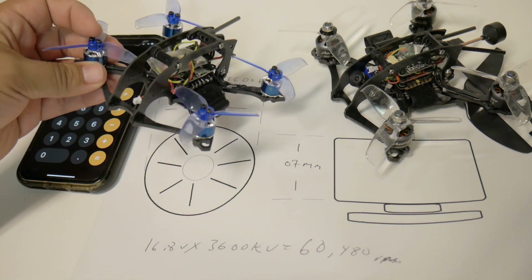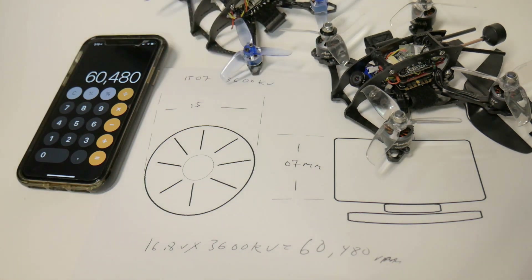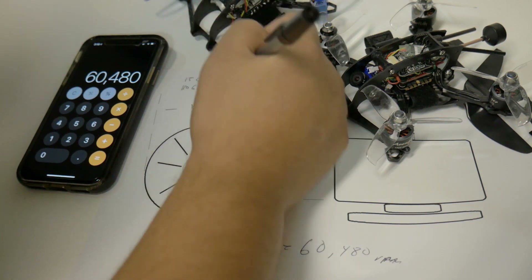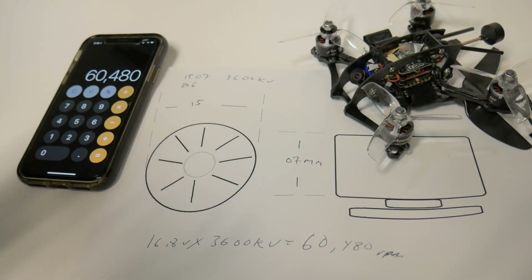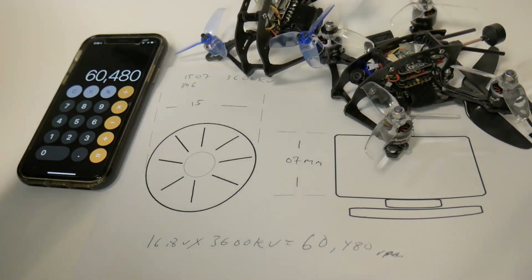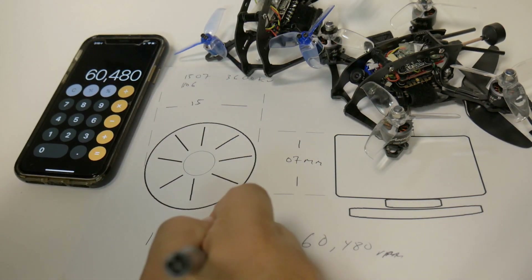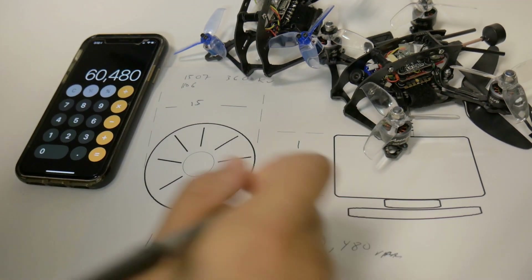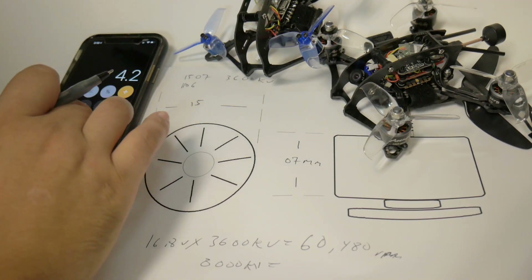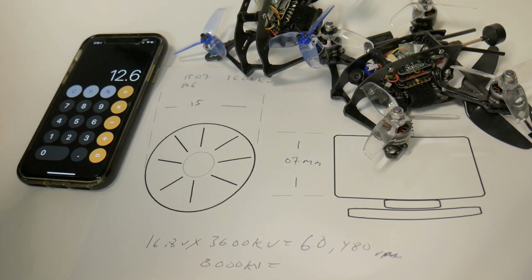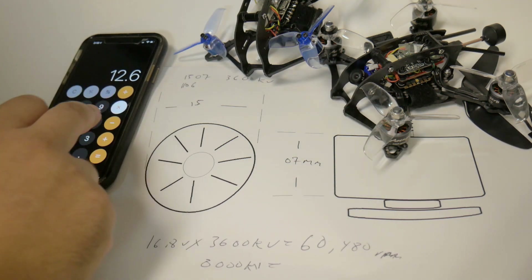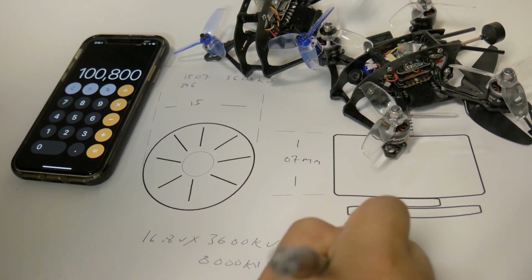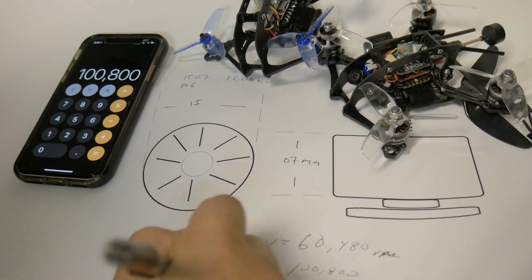Here's a 2.5-inch Massive Droner running 1106-size motors at 8000 KV on a 3S battery. So: 4.2 volts × 3 cells = 12.6 volts. 12.6 × 8000 KV = 100,800 RPM.